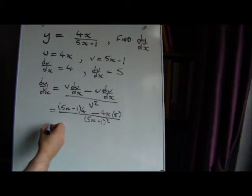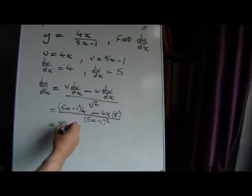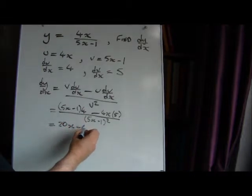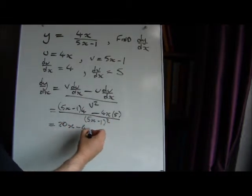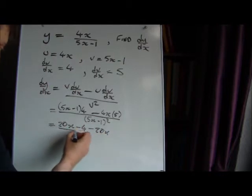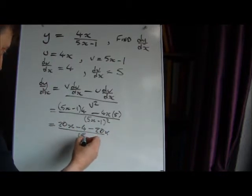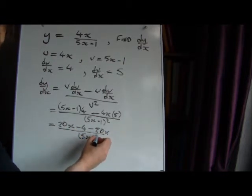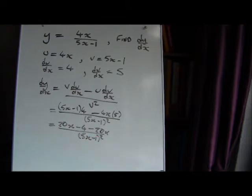Let's see if we can simplify this. Expanding the brackets on the top gives us 20x minus 4 minus 20x, and it's all divided by that. We're not going to expand the brackets because it generally makes things more complicated.